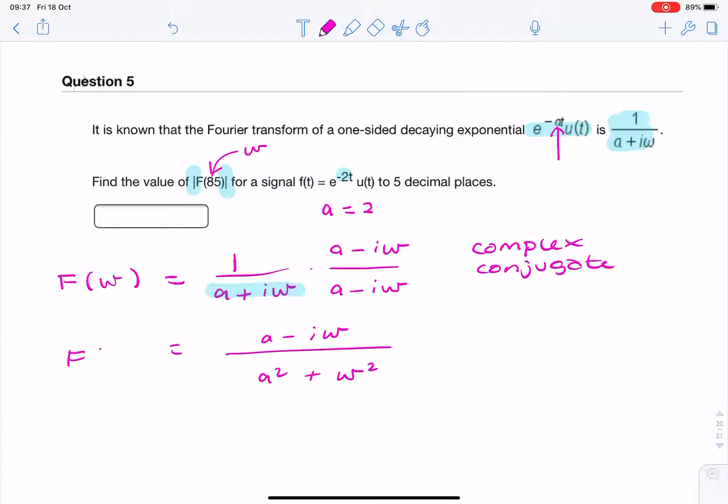So, that's f of omega, and that's fine. But the question was, find the magnitude, so the modulus. We need to find, because this is now a complex number, because we still have the imaginary number i in it, we still need to find the magnitude of f of omega.